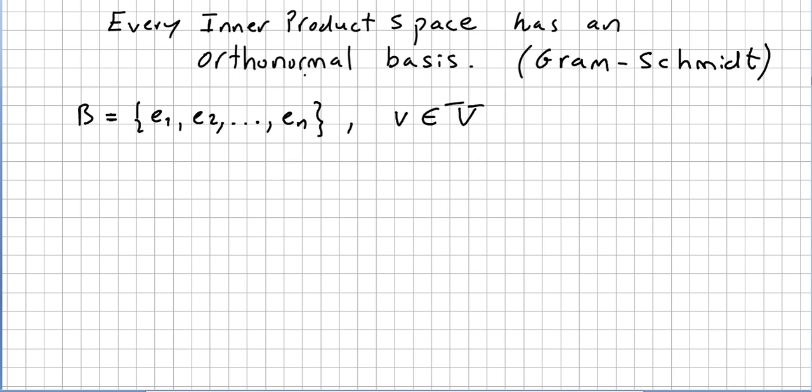From any basis you can get through the process of Gram-Schmidt. Gram-Schmidt are two mathematicians—students usually think that Gram-Schmidt is one person, but no, it's Mr. Gram and Mr. Schmidt. So let us say that this B here is an orthonormal basis.